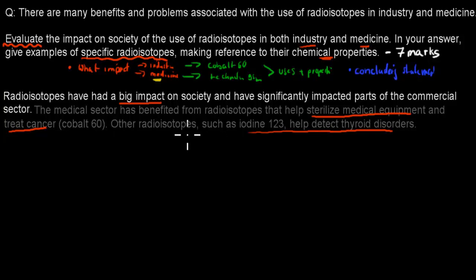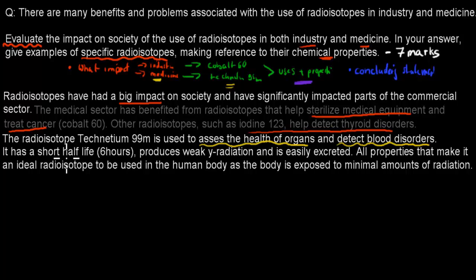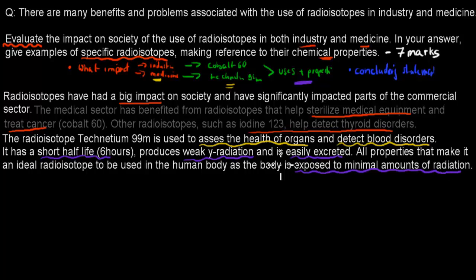Named three or so general benefits, then go into the detailed specific one for the medical sector: technetium-99m. The radioisotope technetium-99m is used to assess the health of organs and detect blood disorders. Now talking about its properties: it has a short half-life, it produces weak gamma radiation, and it's easily excreted. All these properties make it an ideal radioisotope to be used in the human body, as the body is exposed to minimal amounts of radiation. So I've related the properties to why it gets used — because there's not much radiation that occurs.